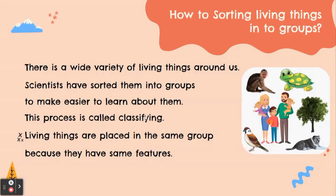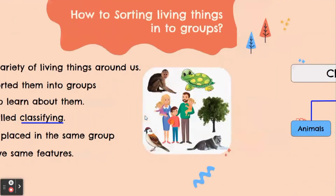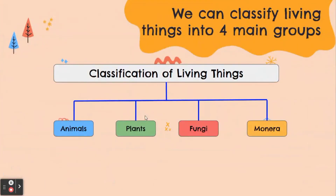This process is called classifying. Living things are placed in the same group because they have the same features. We can classify living things into four main groups.